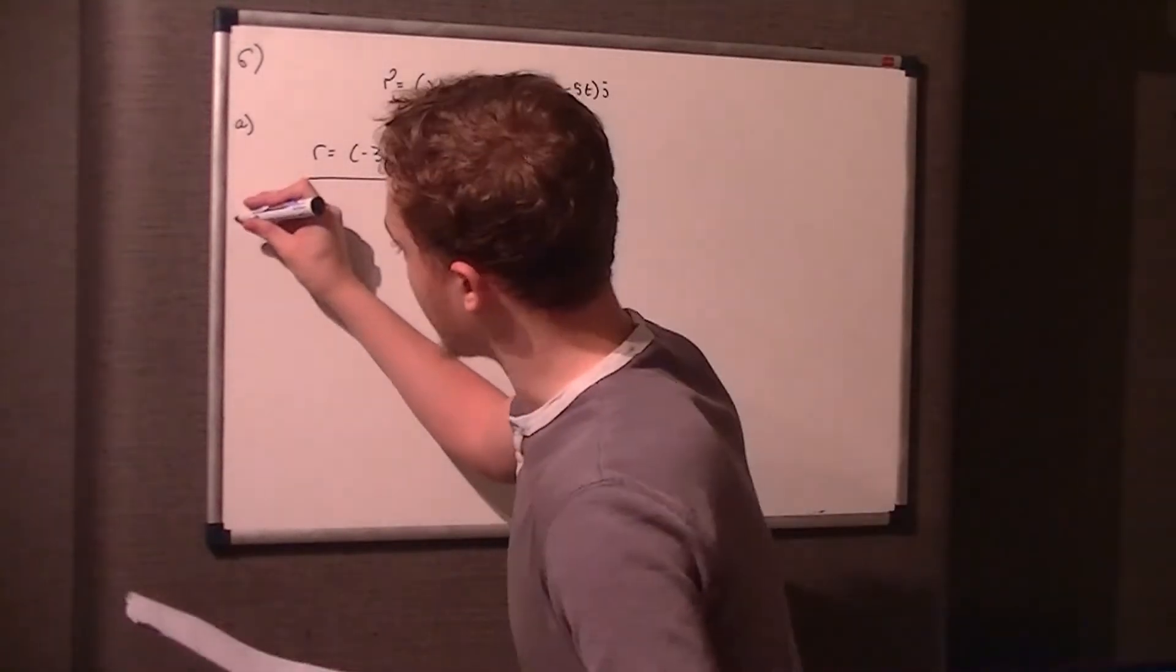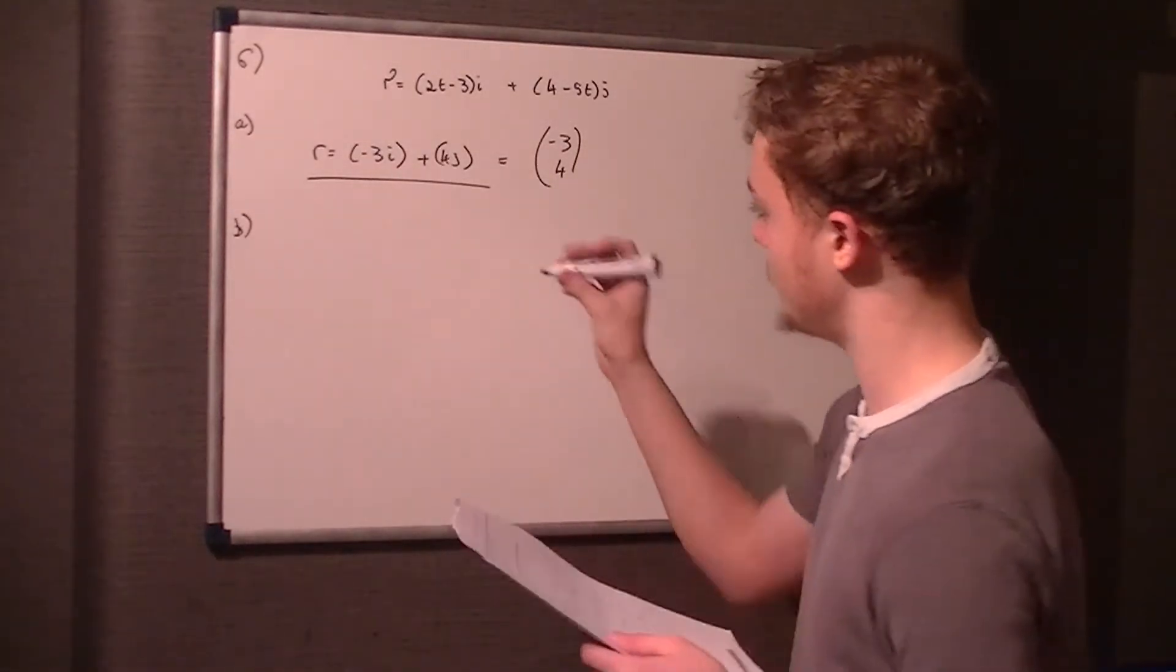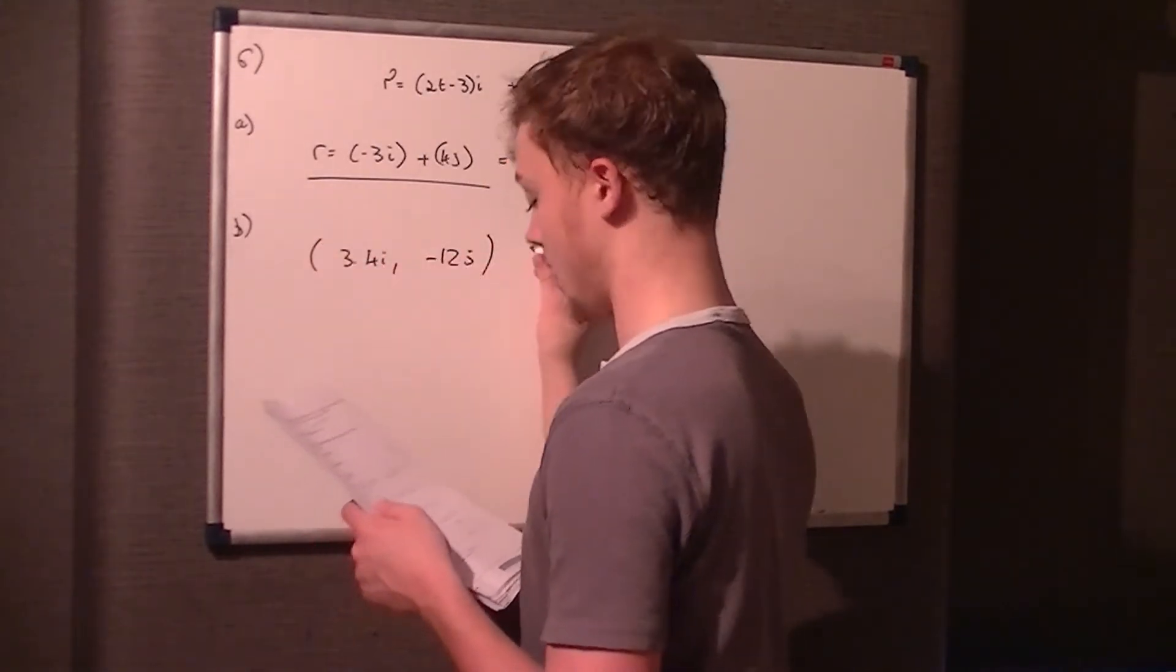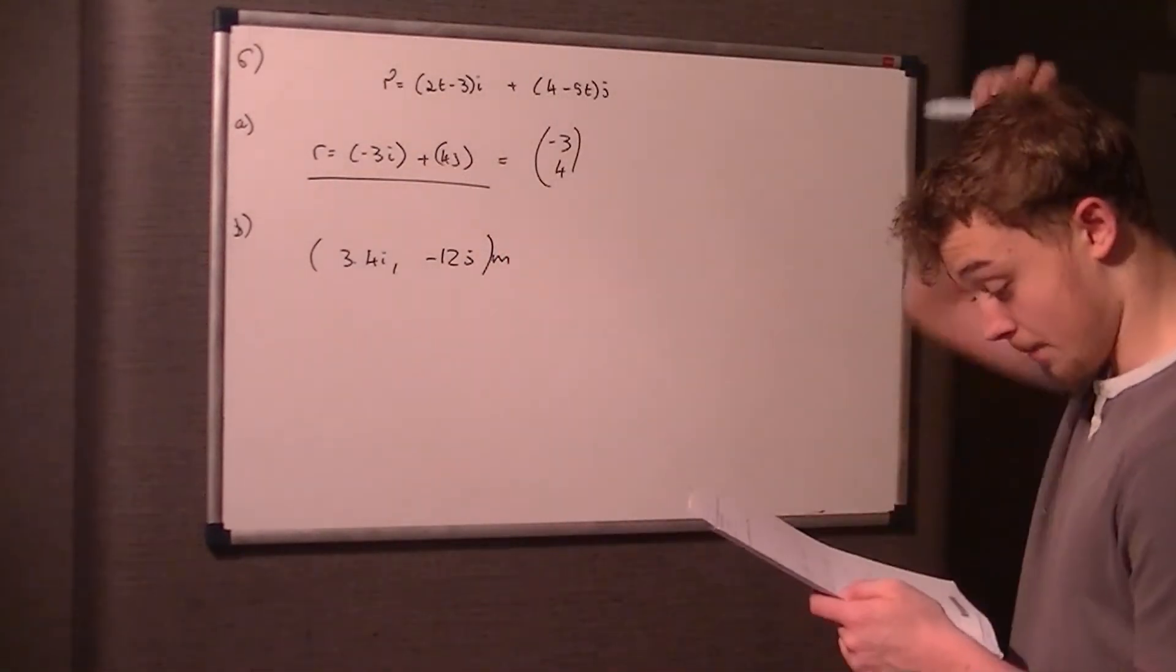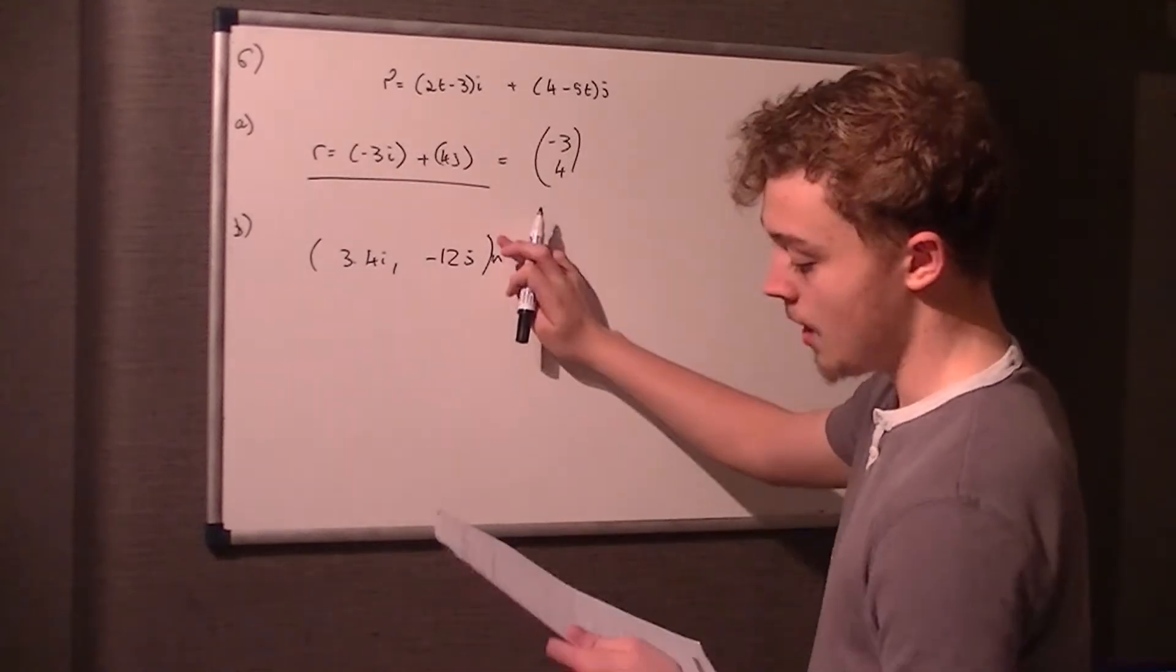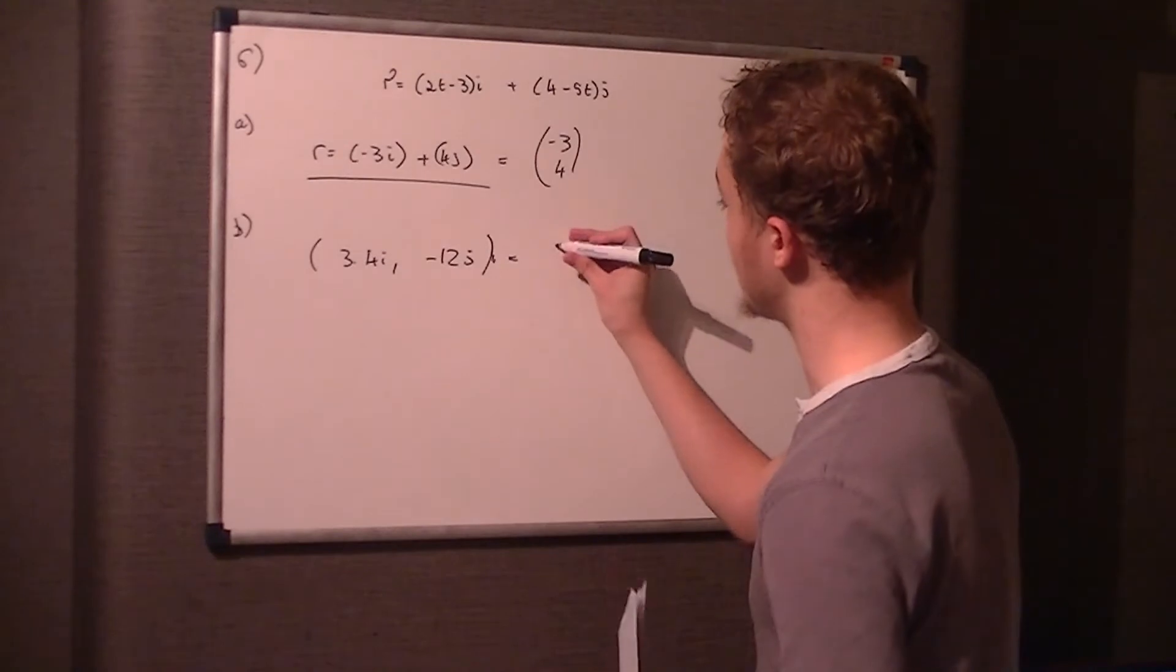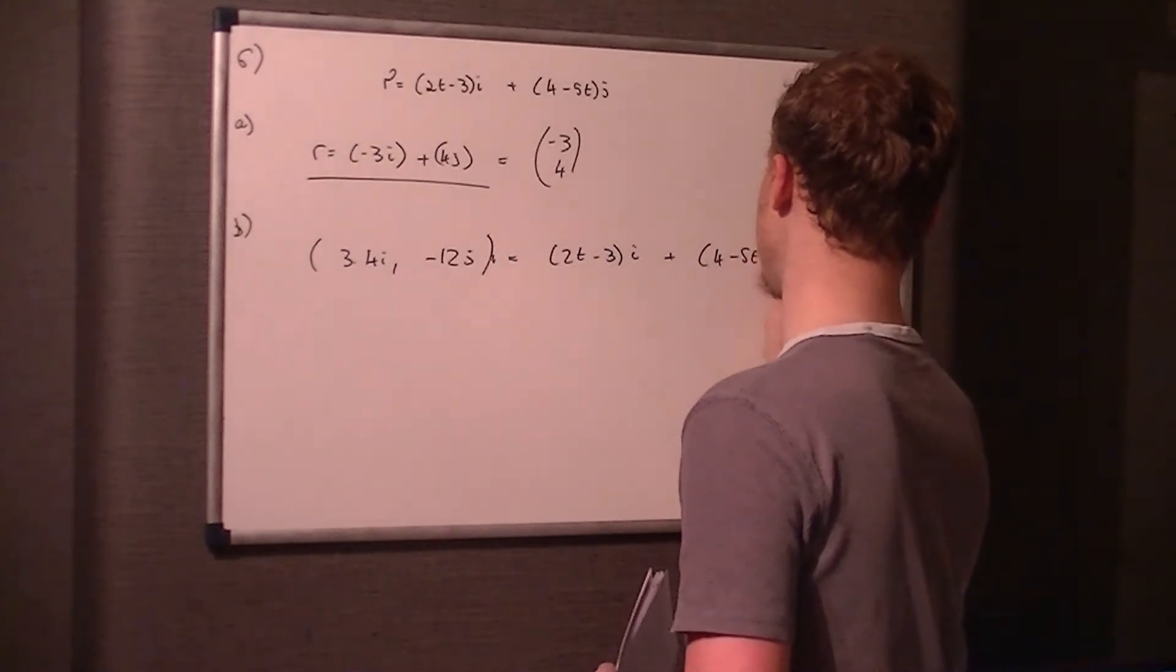Okay, the next part is a little bit more complicated, it couldn't really be easier than that. The particle P passes through the position vector 3.4i and -12j meters at time t seconds, find the value of t. So, what this is saying, this is the position vector, and this is our position vector equation. So we just got to work out what t is, what we have to put t equal to, to get these two points. So basically, we put this equal to our position vector.